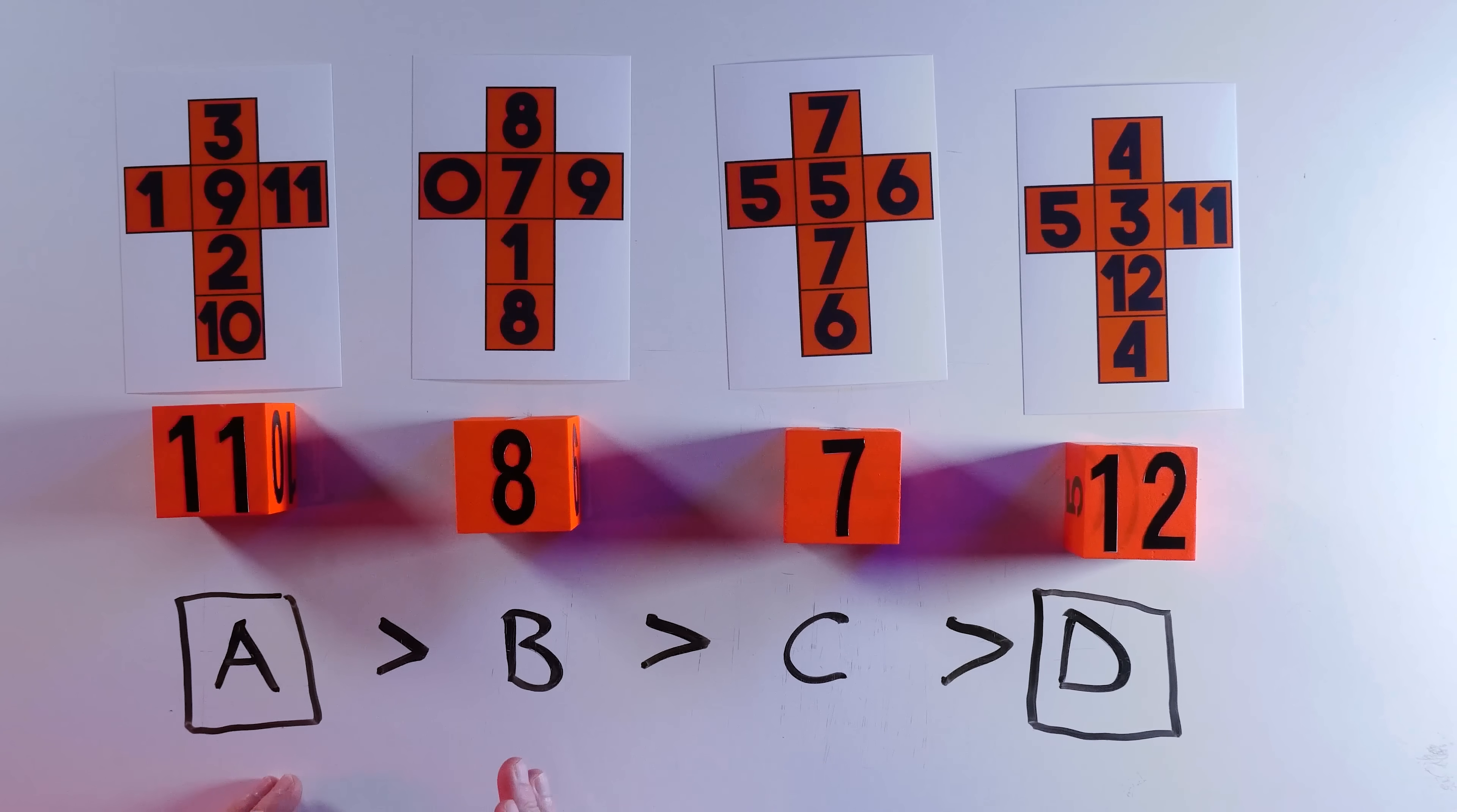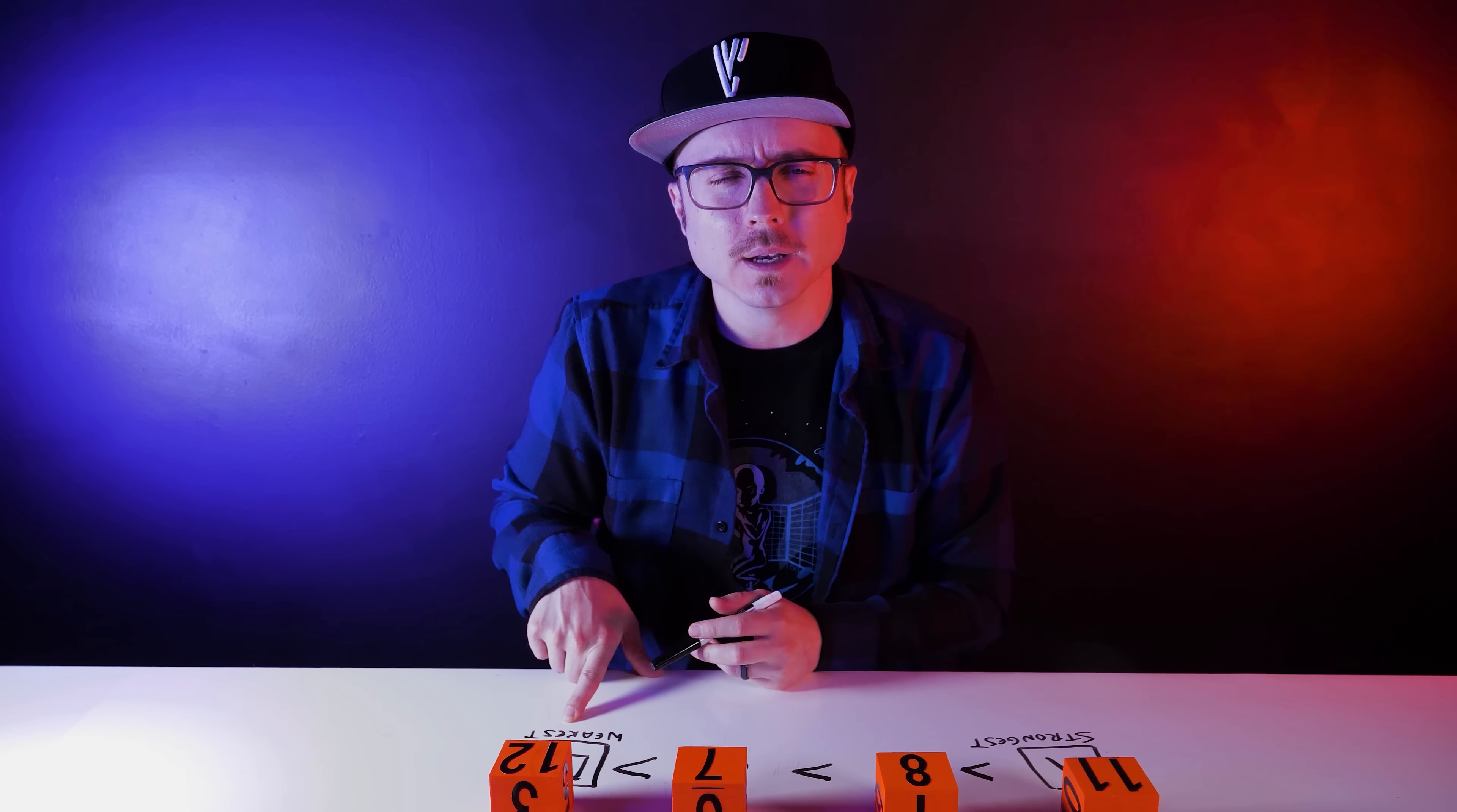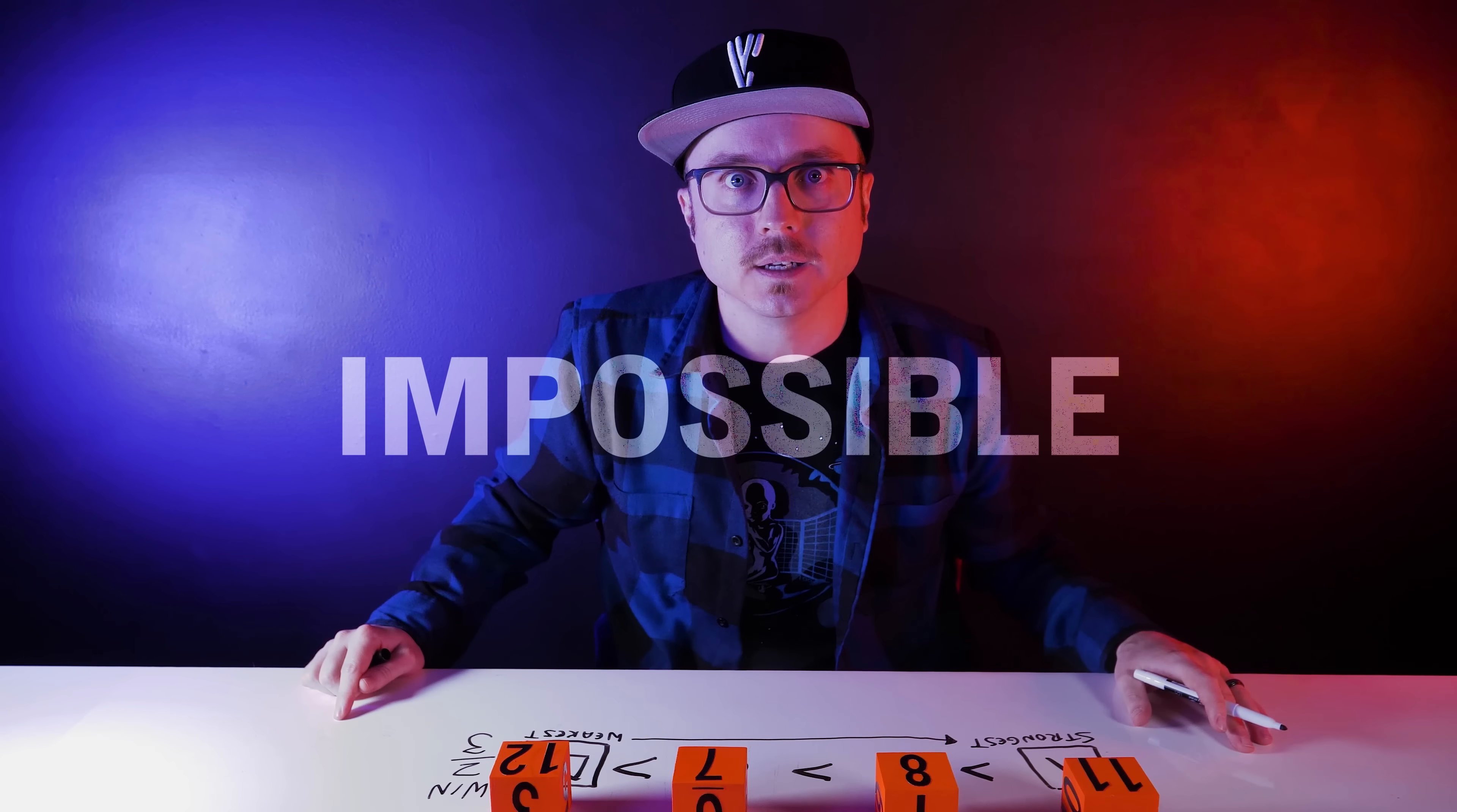A is better than B, B is better than C, and C is better than D. If we get a tie, we'll just roll again. You choose A, the strongest die. I want the weakest die, because it's actually not. D is at the losing end of our chain, and my D die is still going to win nearly two-thirds of the time against your strong A, which seems impossible, but let's test it!